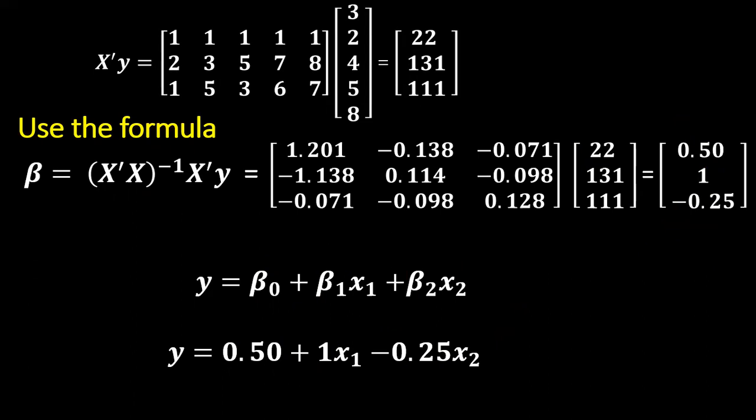Why do we use the matrix method instead of the normal method? The normal method is very tedious for multiple regression. For multiple regression, you can use the matrix formula and it will be easy. The only things you need to know are how to multiply matrices and how to find the inverse of a matrix — we are doing a separate video for that in the mathematics section of this channel.